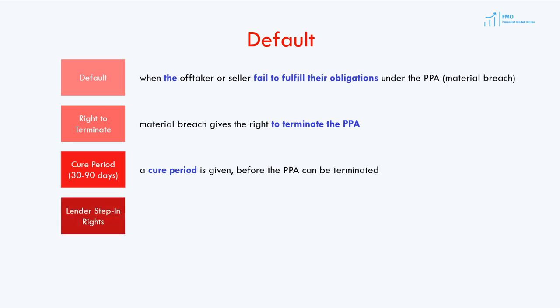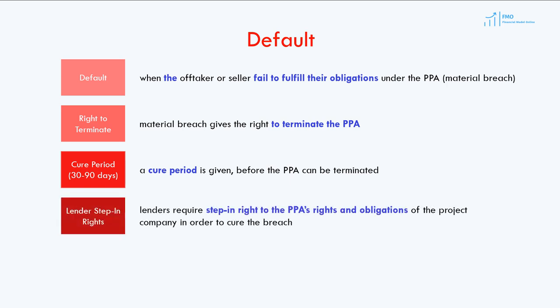The PPA will also include a provision called Lender Step-in Right, which allows the lender to assume the rights and obligations of the energy seller. Most renewable projects employ debt financing, and for the energy seller to attract debt financing, the PPA must include a step-in right for the lender. The lender will use their step-in right to resolve the issues the energy seller is facing, including, if necessary, injecting additional capital into the project.